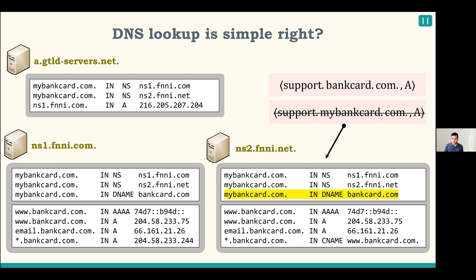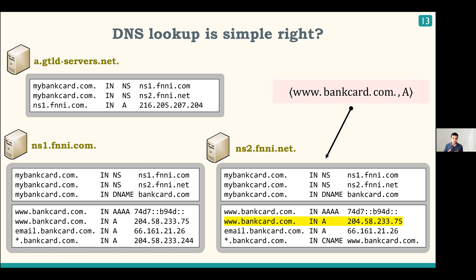At NS2, the zone file identifies a DNAME record as the best match, which rewrites mybanker.com to banker.com in the query. So the new query becomes support.banker.com. This query is then directed to the banker.com zone file, where the best matched record is a CNAME wildcard record — star.banker.com — which matches anything before banker.com when there is no exact match. The CNAME replaces the entire query with www.banker.com. Finally, www.banker.com is an exact match in the zone file, and the IP address is returned to the user.